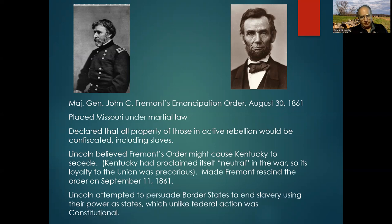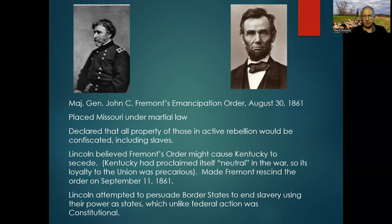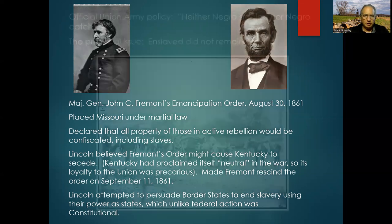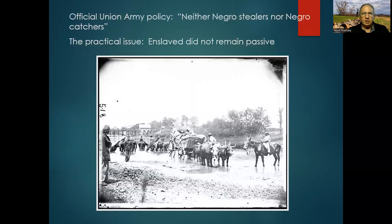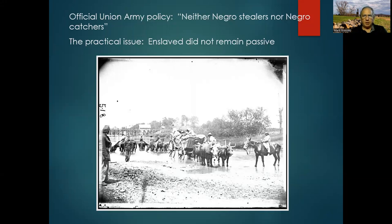What Lincoln did in the early going was try to persuade the border states — Missouri, Kentucky, Maryland — to end slavery using their power as states, since states had a perfect right to rescind slave laws and emancipate slaves if they chose. That was Lincoln's policy in the early going. It didn't work out. As the war moved into the winter of 1862, the official Union policy remained that the Union Army was going to be, as the expression went, 'neither Negro stealers nor Negro catchers.'